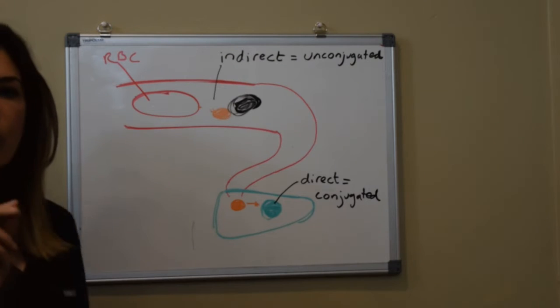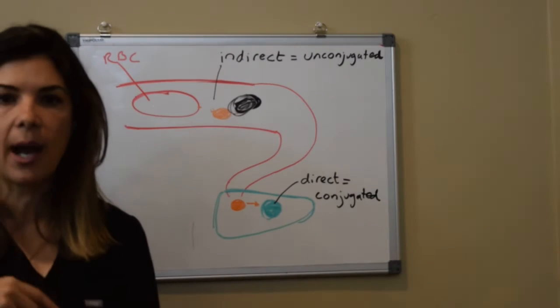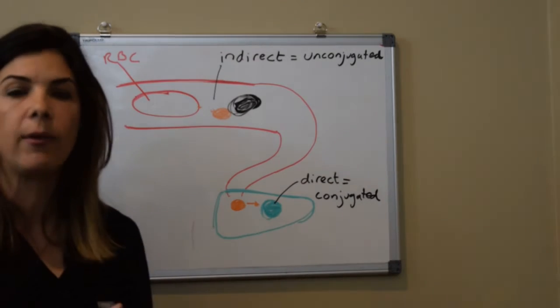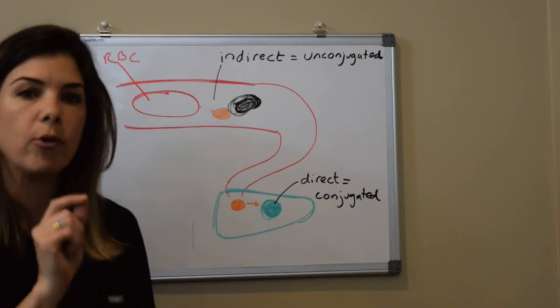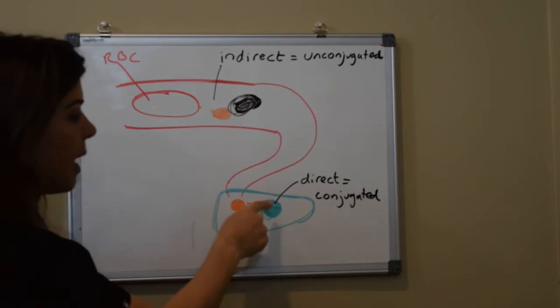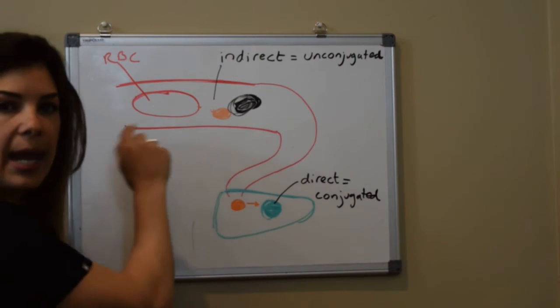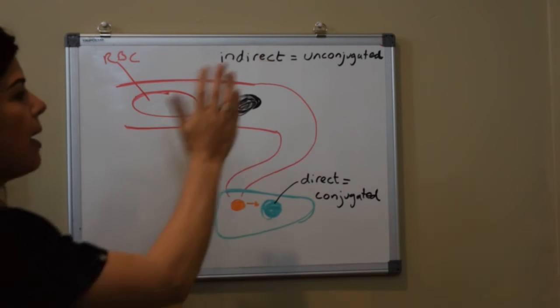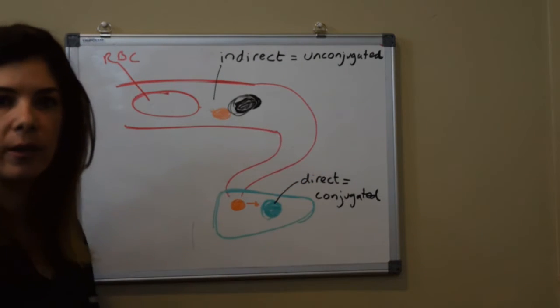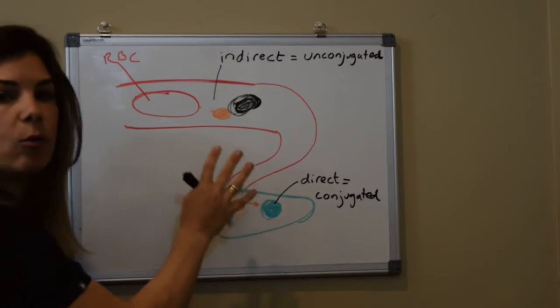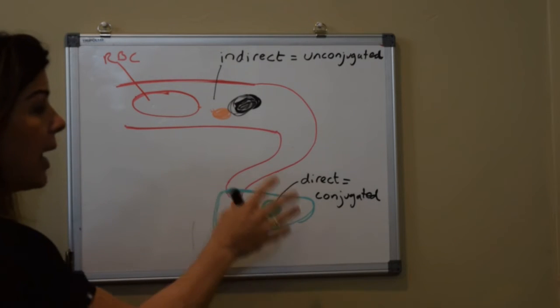That's why when we're looking at the curves to decide at what level we should treat babies we're not just looking at the indirect level, we're looking at the total level. The reason for that is because some of that direct bilirubin is capable of displacing the indirect bilirubin from albumin freeing it up and allowing it to cross into the blood brain barrier.